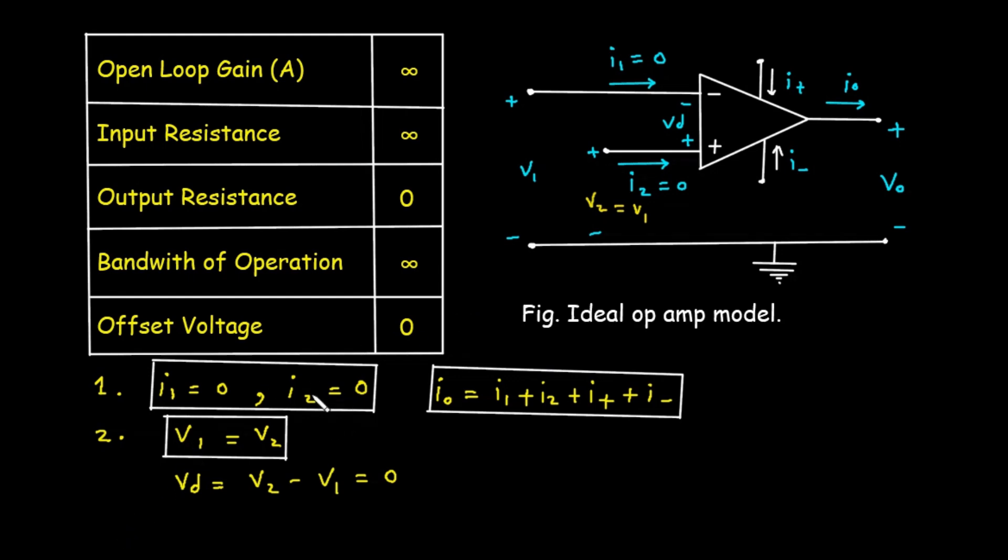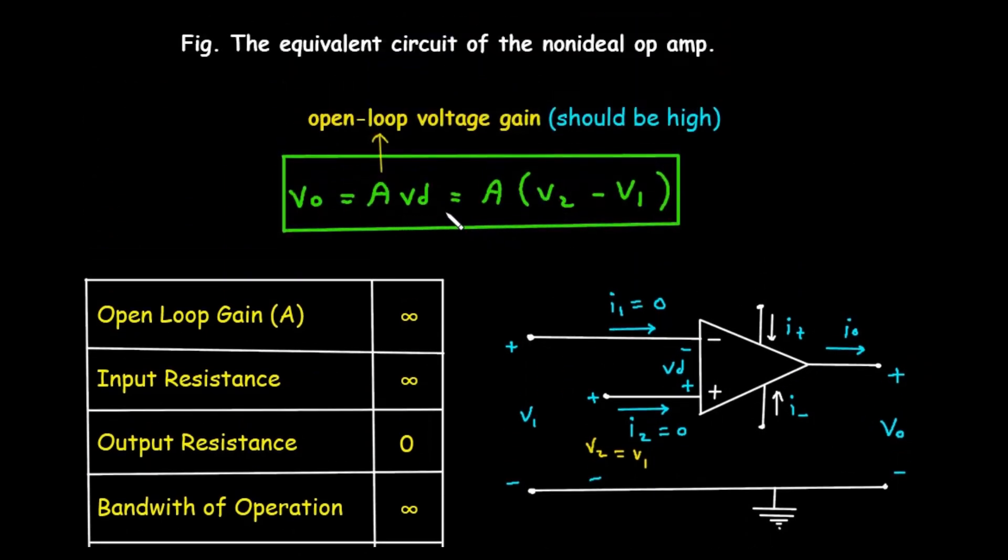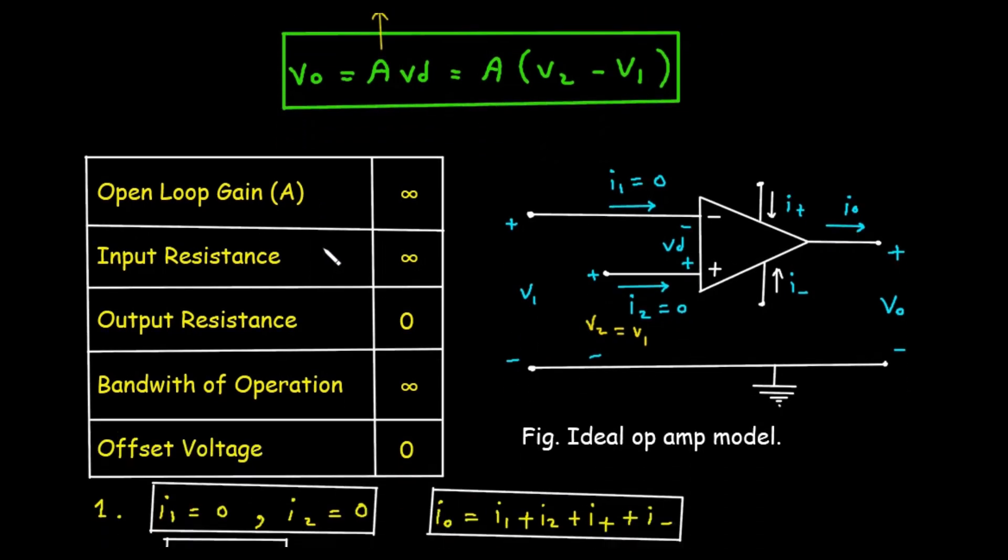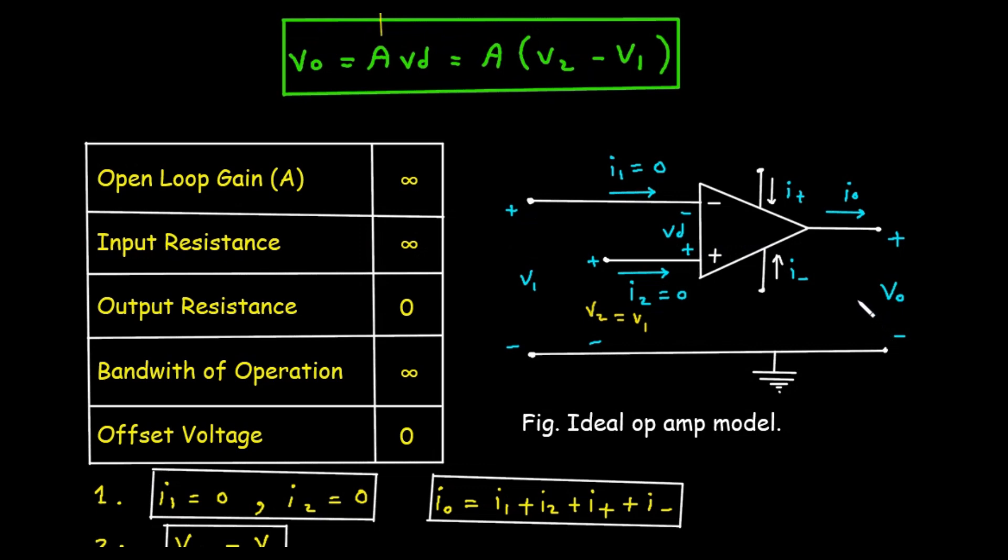Rule number 2 or golden rule number 2: the input voltages are equal, so V1 equals V2. This rule is a clever consequence of infinite open loop gain. Here open loop gain should be infinite in case of ideal Op Amp, that's why V1 should equal V2. Look at the gain equation: VO equals AVD where A represents open loop voltage gain and it should be high. In negative feedback circuit, the output voltage VO is stable.